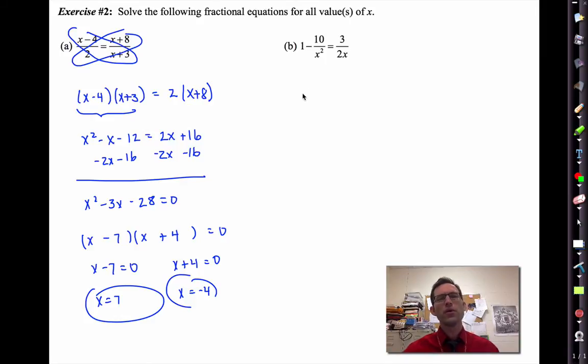In letter B, we could certainly do cross-multiplying if we managed to combine these two terms so they were just one fraction. But the technique I like to use is multiplying both sides of the equation by the same quantity, something that will cancel both an x squared and a 2x. The simplest thing would be to multiply both sides by 2x squared. The left-hand side, we have to distribute that. 2x squared times 1 is 2x squared. When we multiply it here, the x squareds will cancel and we'll get 2 times negative 10, which will be negative 20. On this side, the 2s will cancel and a single x will cancel, leaving 3 times x.